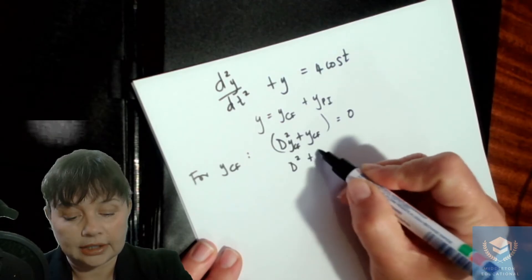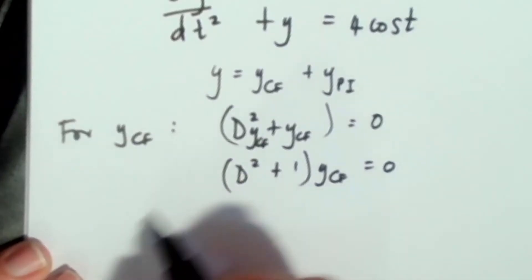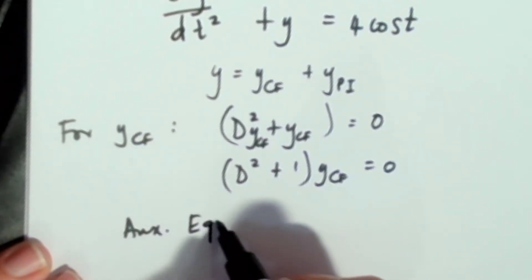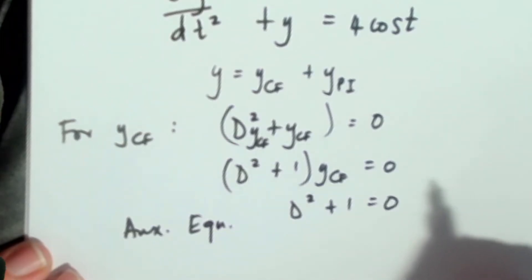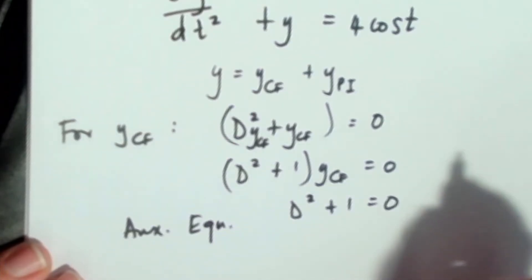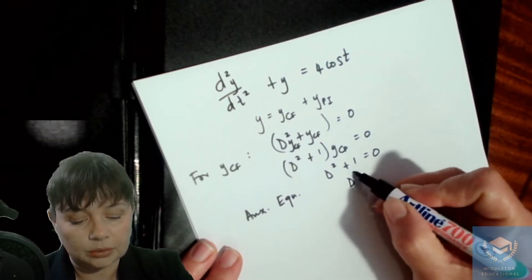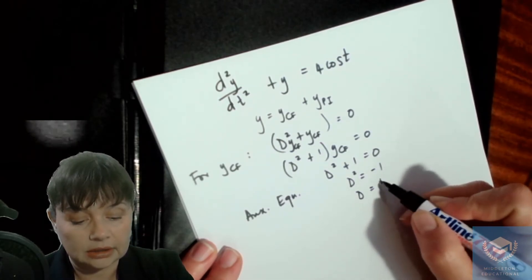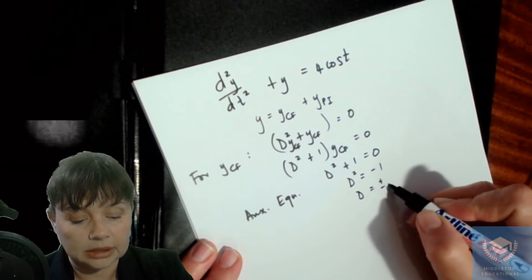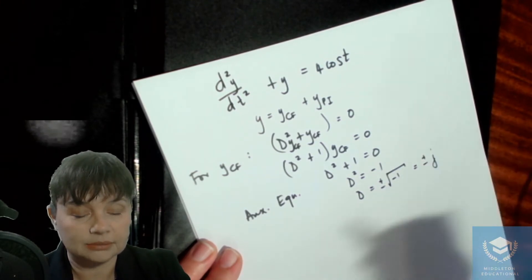So that can be written as y_cf equals zero. Your auxiliary equation is going to be d² + 1 = 0. So now you want to find the roots of d. That is d² = −1, which means d is plus or minus the square root of minus one, which is plus or minus j.